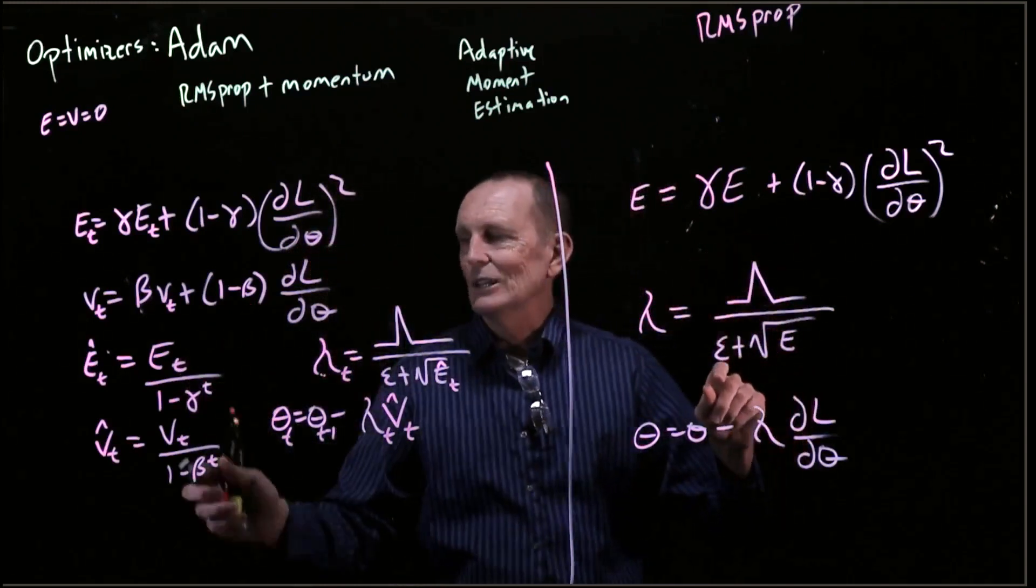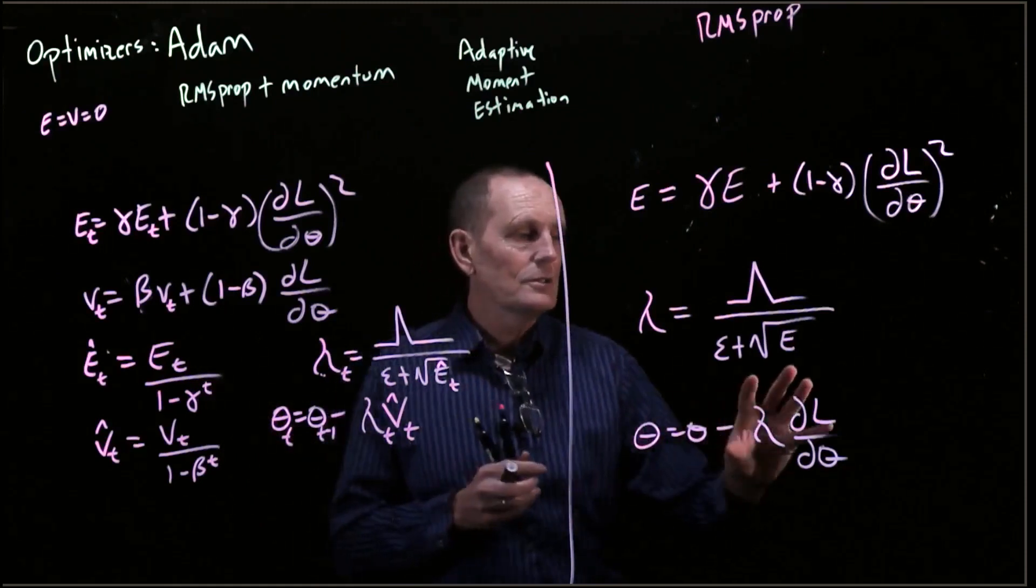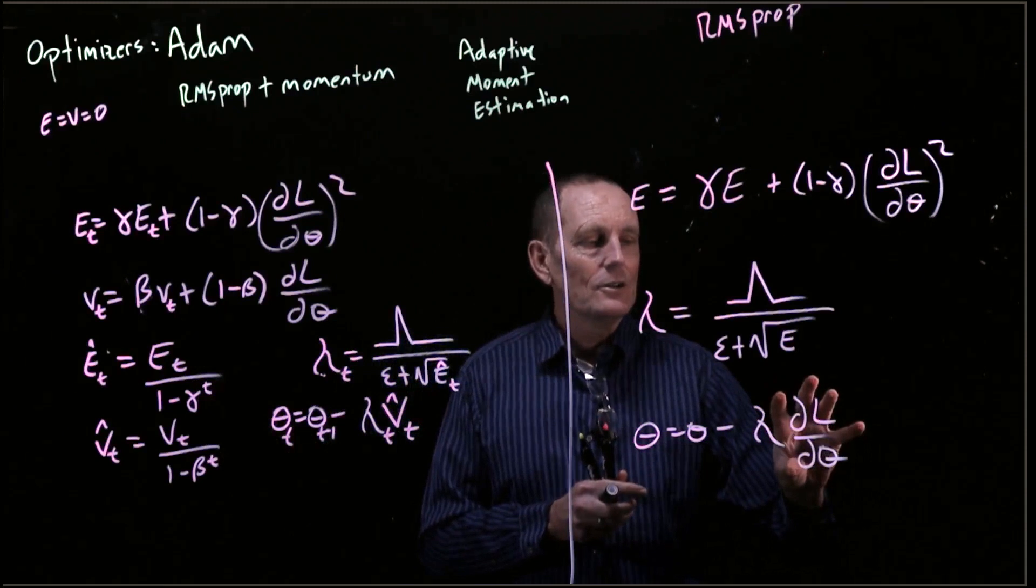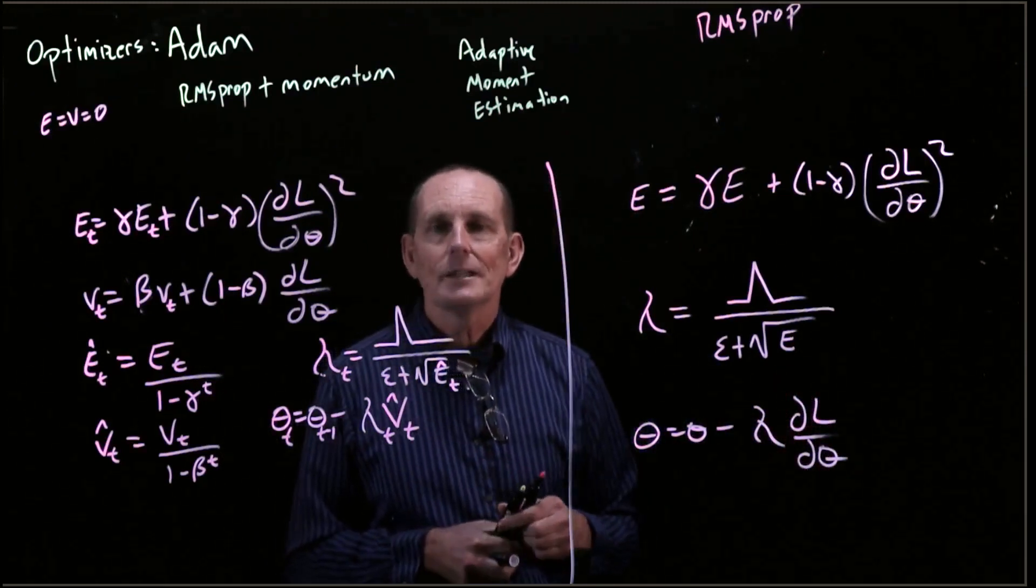All of this looks like RMS prop plus a little fix to the initial values of E and T, the first few values. And then instead of multiplying with a gradient, we multiply by our velocity.